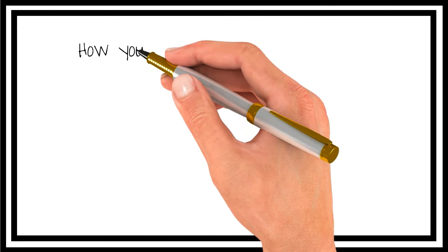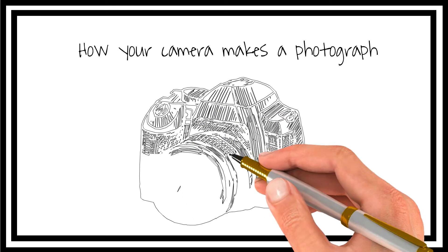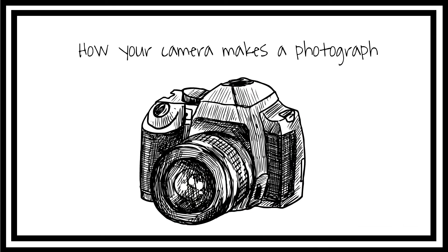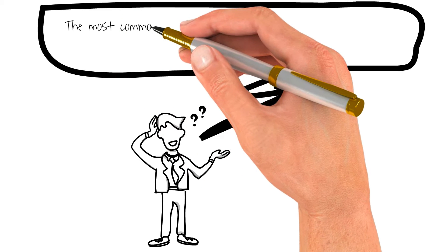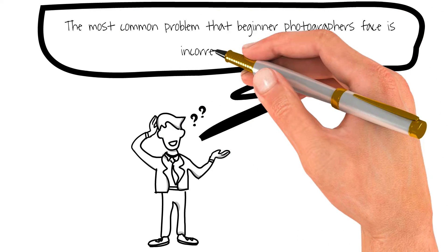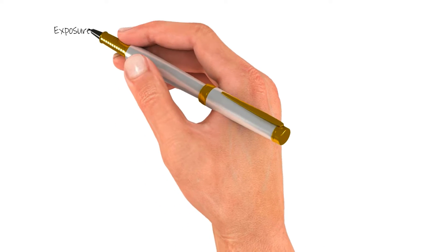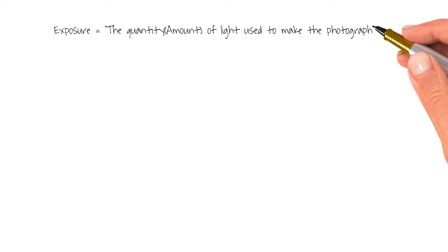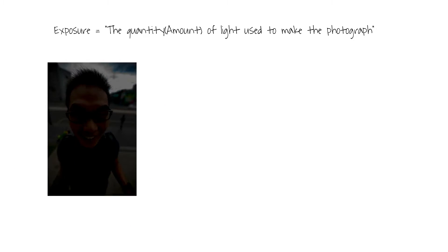Hello everyone and welcome to this video on how your camera makes a photograph. The most common problem that beginner photographers face is incorrect exposure. Exposure is basically the quantity or the amount of light used to make a photograph. Here is an example of an underexposed photograph where it is just too dark.